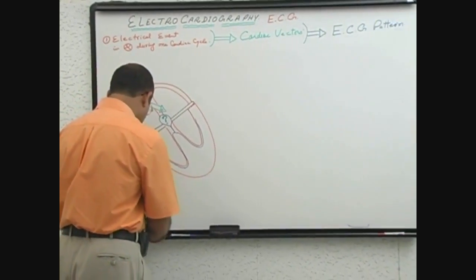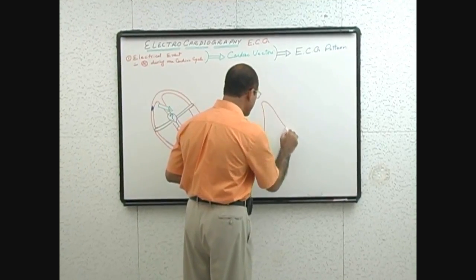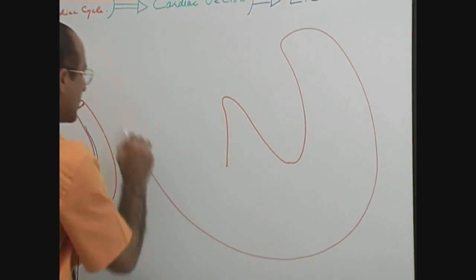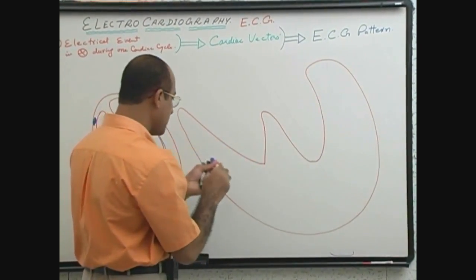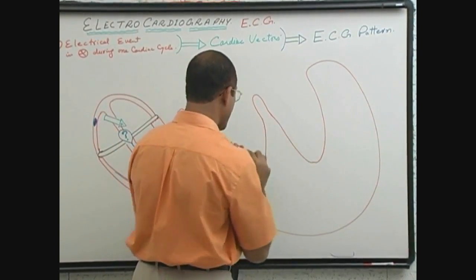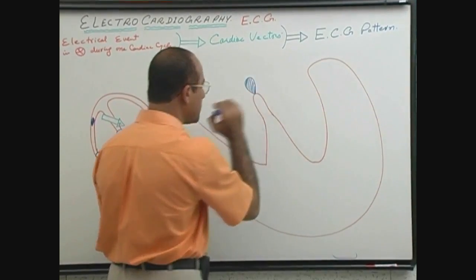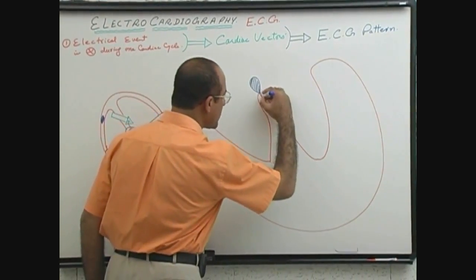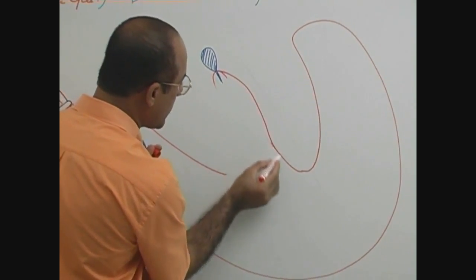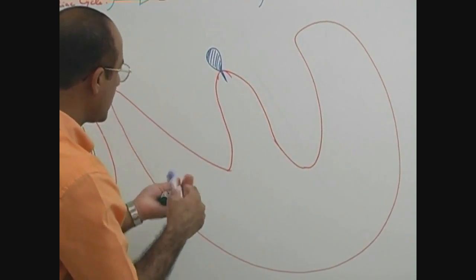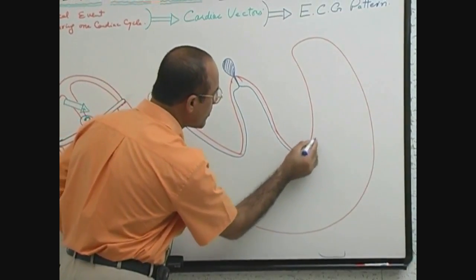Let's make a separate diagram to understand. This is the interventricular septum, this is the left ventricle, and here is the right ventricle. Here is your AV node. Naturally, when current was passing through AV node, the heart was electrically silent. Then current was released through the bundle of His to the bundle branches, and these bundle branches take the current to the septum.